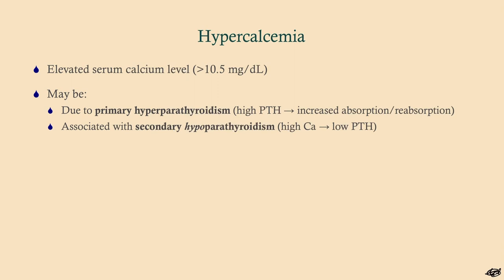Hypercalcemia is a calcium level usually more than 10.5. This can be due to two big things: primary hyperparathyroidism — a high PTH resulting in high calcium, usually due to an adenoma or hyperplasia of the parathyroid glands — and secondary hypoparathyroidism, where you have a high calcium for some other reason, which suppresses the parathyroid gland, giving you a high calcium but a low PTH.